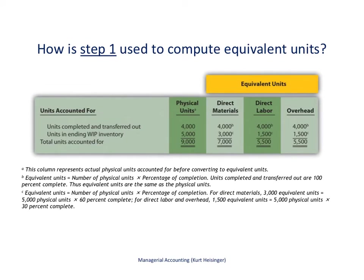So we're looking at step one here, which is to compute what we call equivalent units. There are lots of footnotes here which I recommend you look at. What we have here is the equivalent unit calculation. We start with physical units — how many units do we have in work in process? Essentially 9,000 have gone through work in process: 4,000 were completed and transferred out, and 5,000 are still sitting in work in process at the end of May.